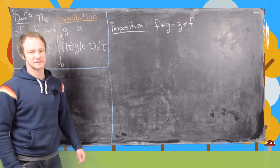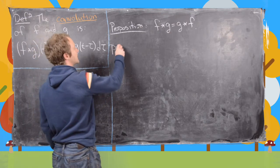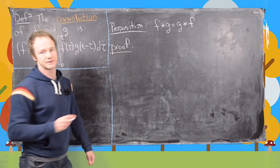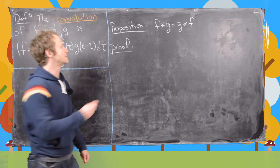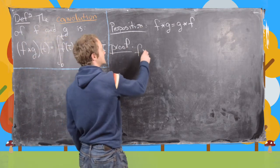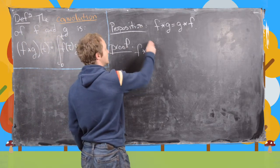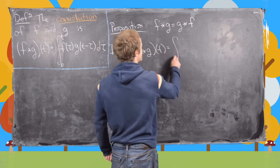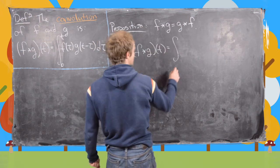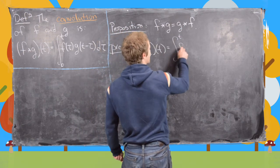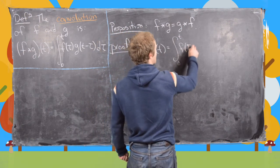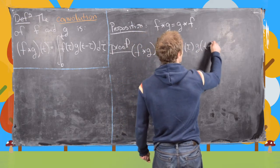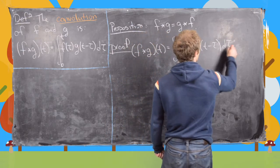Let's look at this proposition first. It's a fairly straightforward computation, but it's useful to see anyway. So f★g of t is going to be the integral from 0 to t of f(τ) g(t − τ) dτ.